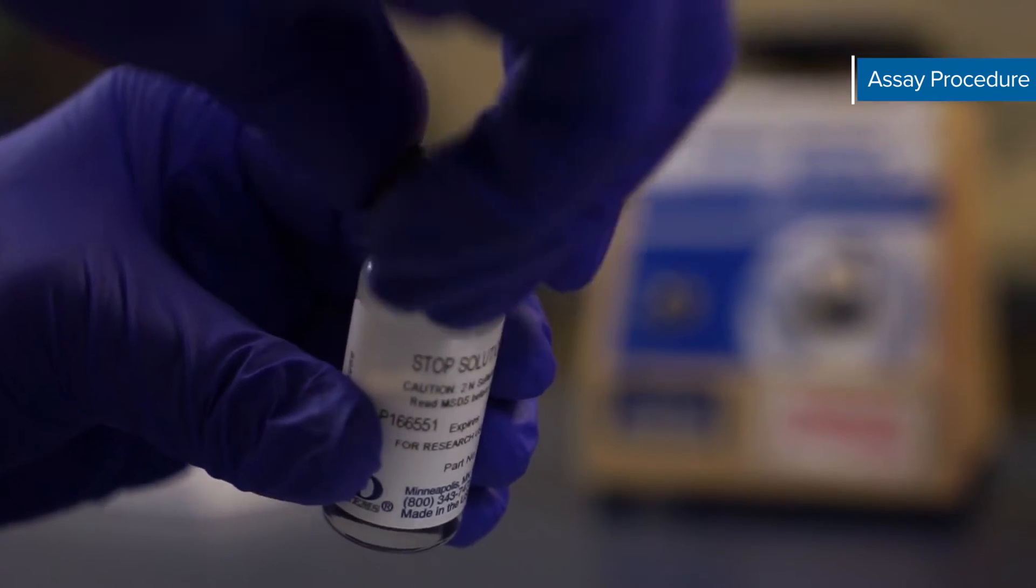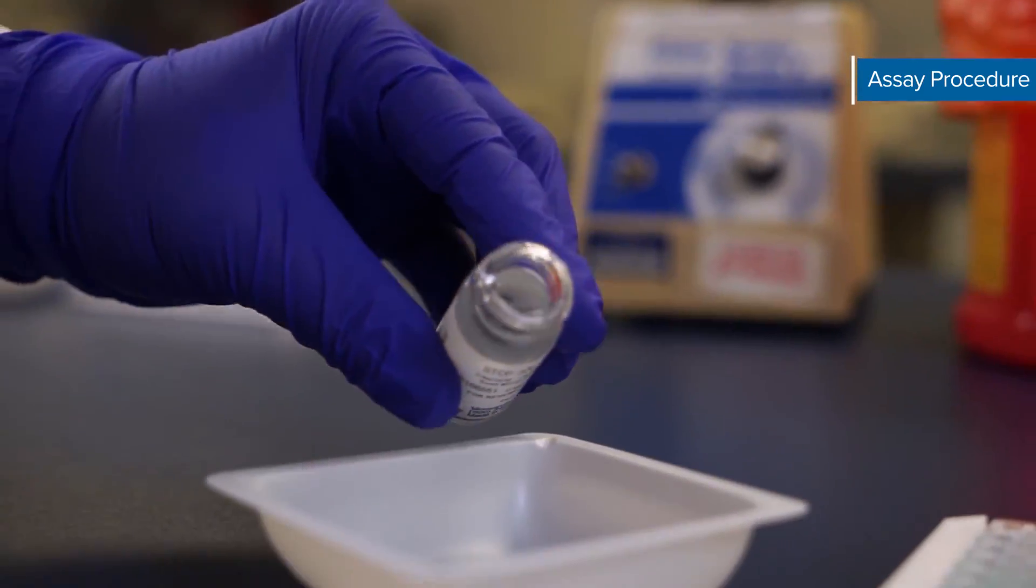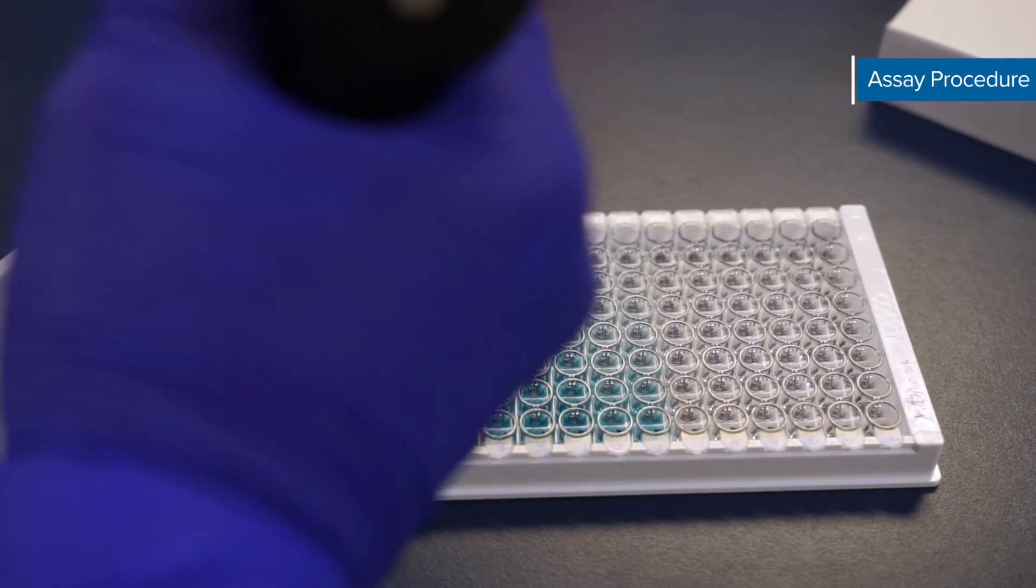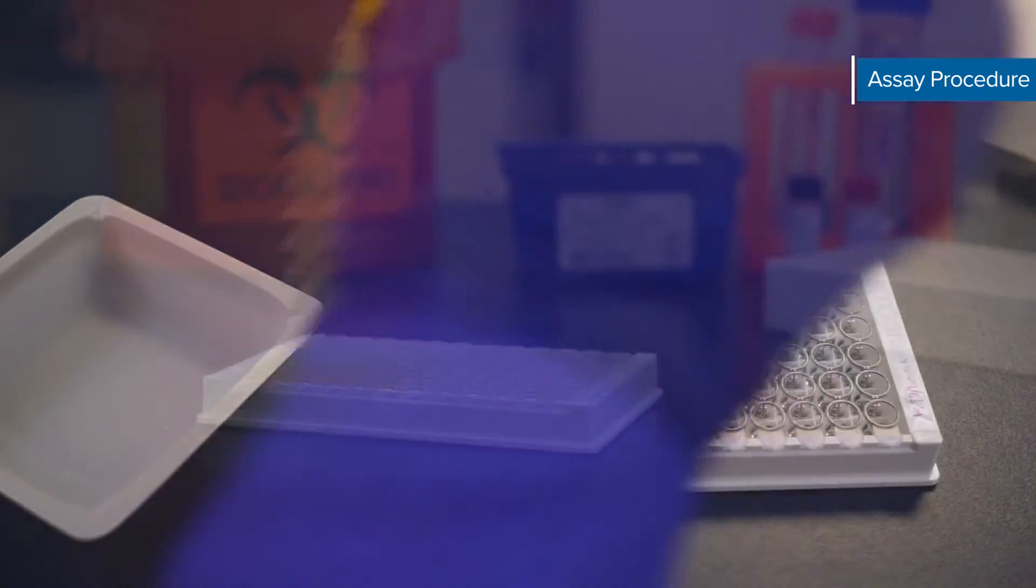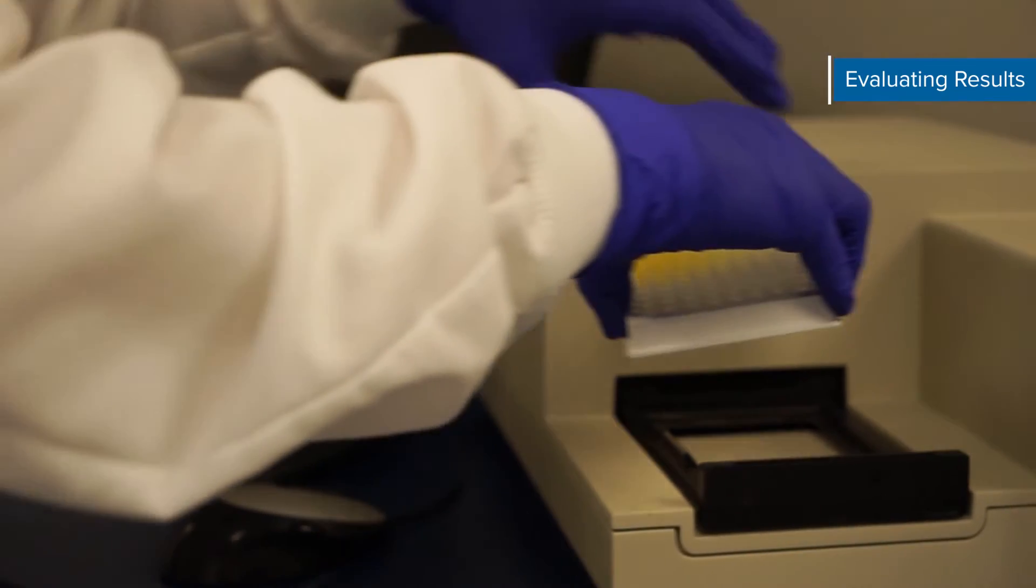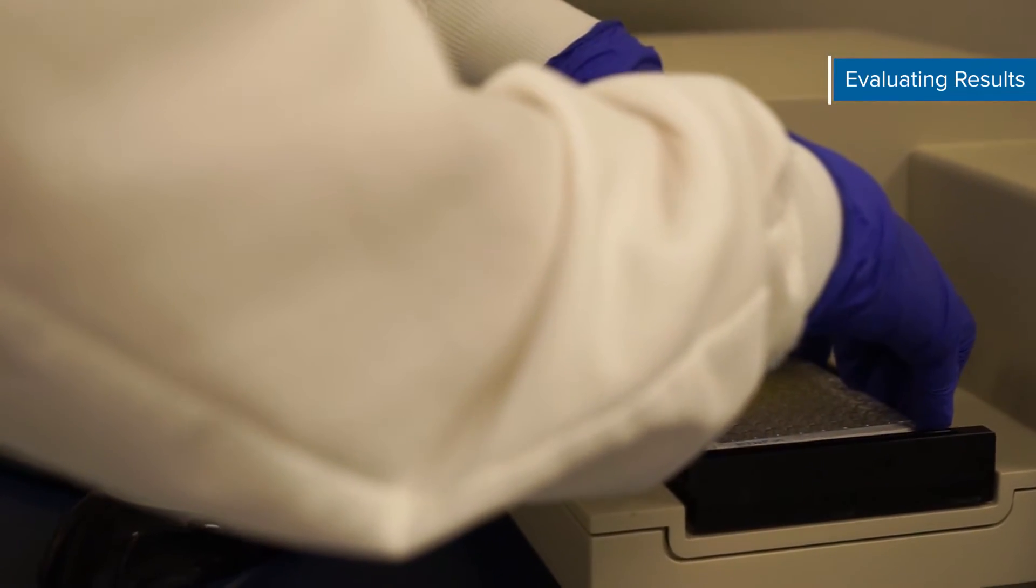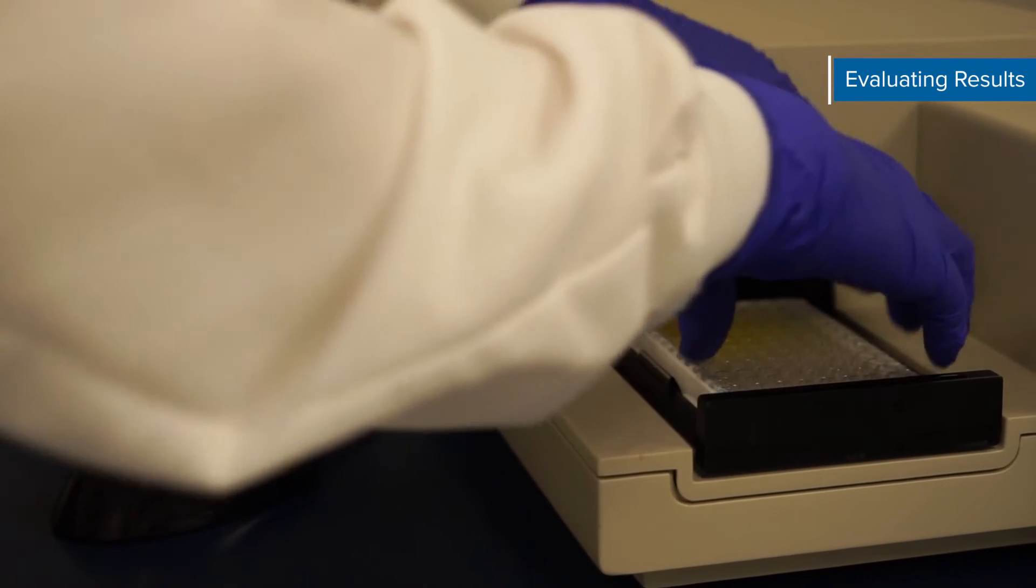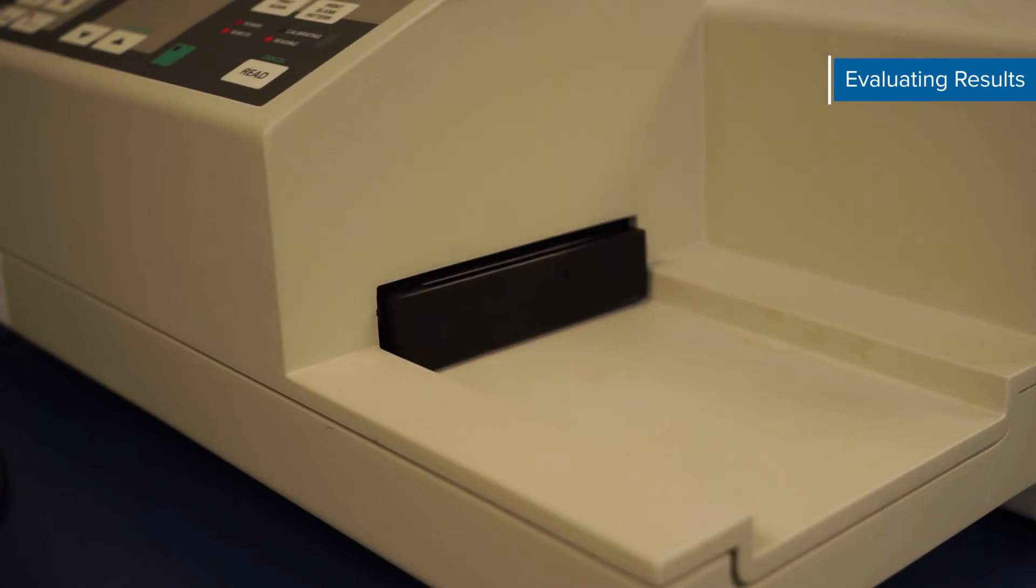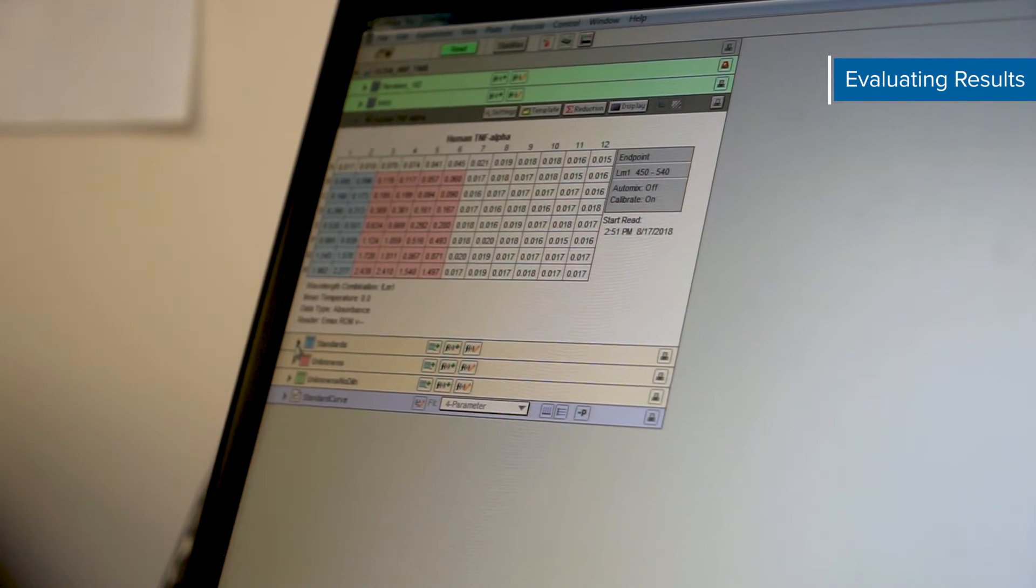Finally add 50 microliters of stop solution by quickly dispensing it into each well. Gently tap the plate to ensure thorough mixing. Read the optical density of each well immediately using a microplate reader set to 450 nanometers. If wavelength correction is available set it to 540 or 570 nanometers. This subtraction will correct for optical imperfections in the plate.